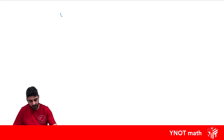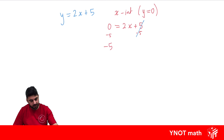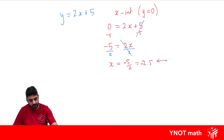So if we have an equation of a straight line, let's say y equals 2x plus 5, we can find the x and the y-intercepts by making the other value equal to 0. If I want the x-intercept, I make y equal to 0. Substituting y equals 0, this becomes a two-step equation: minus 5 from both sides gives 0 minus 5 equals minus 5, leaving 2x. Dividing both sides by 2 gives x equals minus 5 over 2, or minus 2.5. And that's the x-intercept.